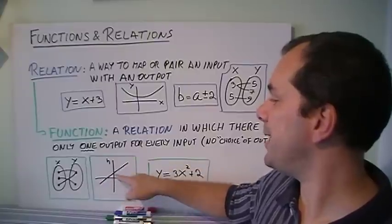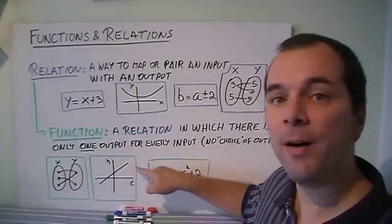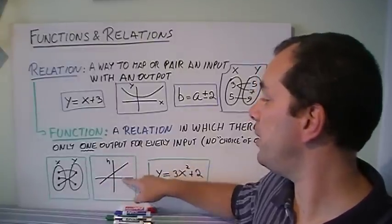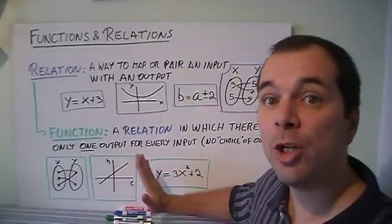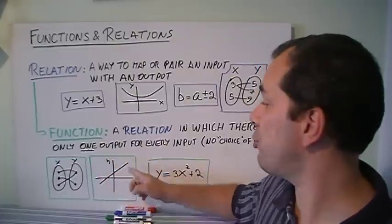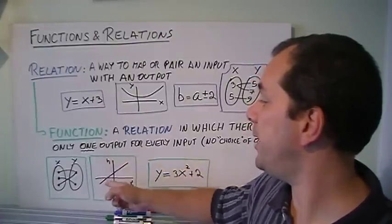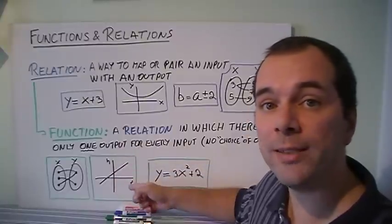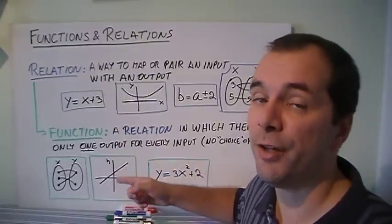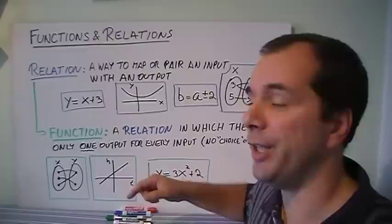A straight line like this, well, I can see that I can go up and find that there's only going to be one output. Actually, that's going to be called a vertical line test. If I can draw a vertical line and I can only cross the function once on a graph, that means it is a function. I'm going to call that the vertical line test. Write that one down.